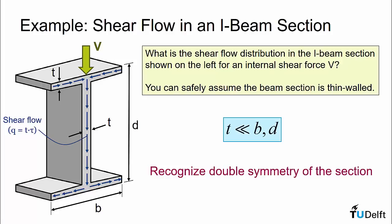It is also important to recognize that the problem is double symmetric. This will come in handy because we only need to solve for the shear flow distribution in one half of one flange and one half of the web, and then we know the distribution in the other parts due to symmetry.